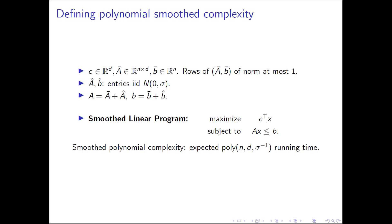On the question of condition numbers: Spielman and Teng analyzed that once you normalize the matrix and add noise like this, the matrix does become well conditioned — irrespective of how ill-conditioned it was before, if you add enough random noise the matrix becomes somewhat well conditioned.